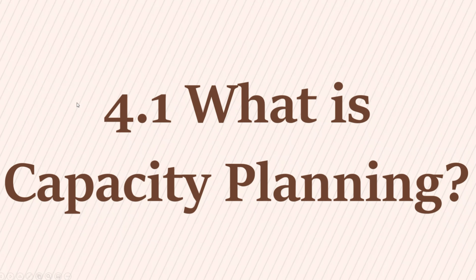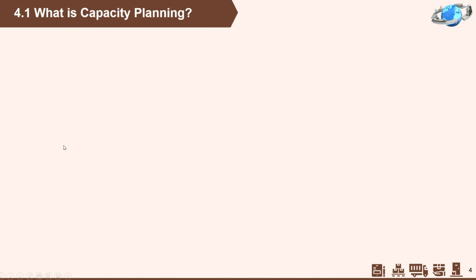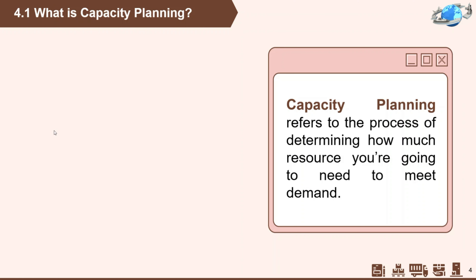So first, what is capacity planning? The word capacity means the upper limit or ceiling on the load that an operating unit can handle. As for capacity planning, it refers to the process of determining how much resource you're going to need to meet demand. This sounds easy, but there are some difficulties in actually measuring capacity in certain cases.